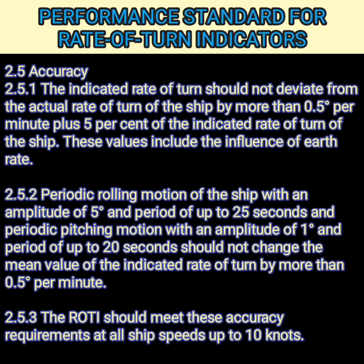The equipment is also affected by the rolling and pitching motion of the ship. The requirement is that periodic rolling with an amplitude of 5 degrees and a period of 25 seconds, and similarly pitching of 1 degree with a period of 20 seconds, should not change the mean value of the indicated rate of turn by more than half a degree per minute. Under these specific conditions, a further half-degree error is allowed.